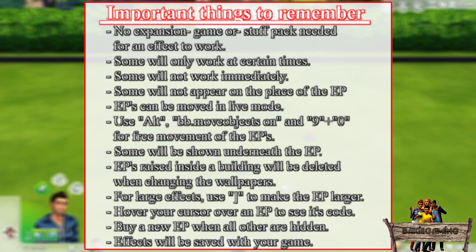When the move objects cheat is active and the effect player is raised, changing the wallpaper inside a building will remove the effect player. Some effects can be very large, hiding the effect player — to make it easier to delete or move them, make them larger using the bracket keys on your keyboard. If you don't know which code is used for a certain effect you placed, just move your cursor over that effect player to see its code. If you hide all effect players and delete the one that's left, you can buy a new one to make them visible again. And last but not least, effects placed will be saved with your game.